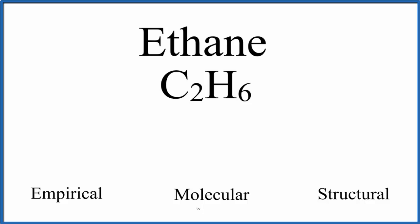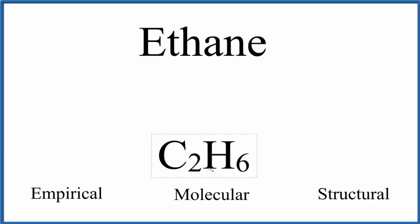So let's start out with the molecular formula. The molecular formula shows us the number of each type of atoms in a molecule of ethane. So if we had a molecule of ethane, this would be the molecular formula, C2H6. Two carbons, six hydrogens.